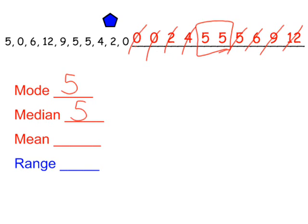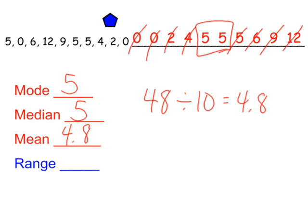To find the average, we add up all ten numbers, which comes out to 48. There are ten numbers, and 48 divided by ten is 4.8, so our mean, or average, is 4.8. For the range, the high minus the low: 12 minus zero equals 12, so our range is 12.